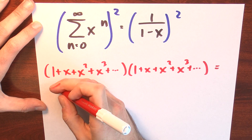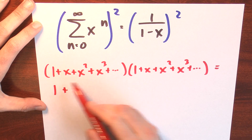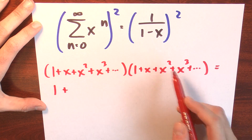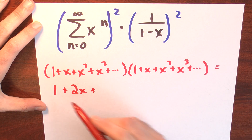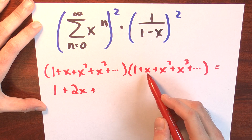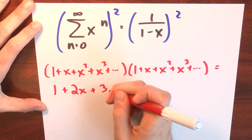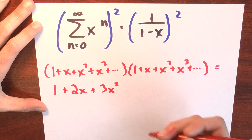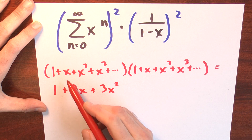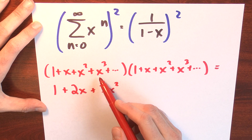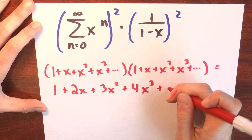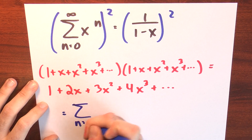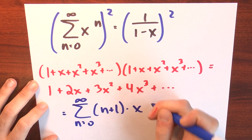When I multiply these together: 1 times 1 gives 1. For x terms, I get 1 times x or x times 1, so that's plus 2x. For x squared terms, I can multiply 1 times x squared, x times x, or x squared times 1, giving 3x squared. For x cubed, I can multiply 1 times x cubed, x times x squared, x squared times x, or x cubed times 1 — that's 4 ways, giving 4x cubed, and so on. It certainly looks like this is giving me the sum n goes from 0 to infinity of n plus 1 times x to the nth power.